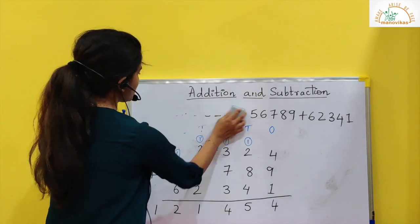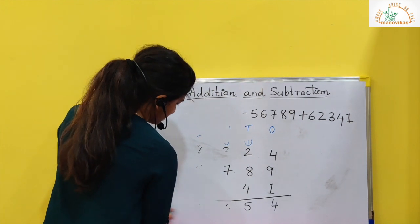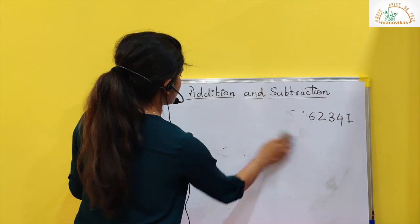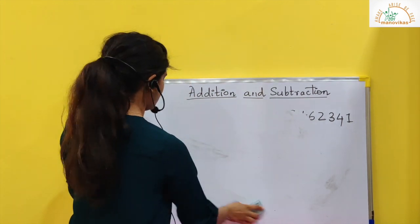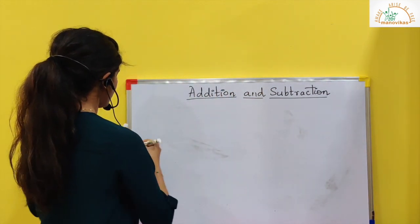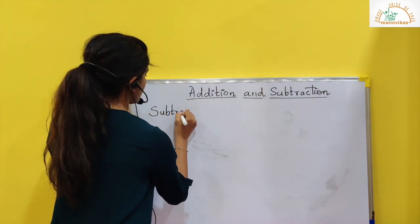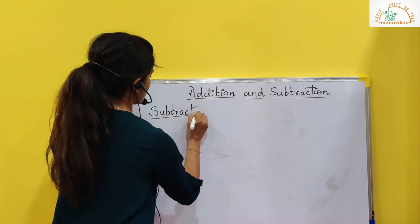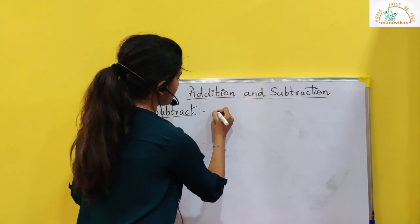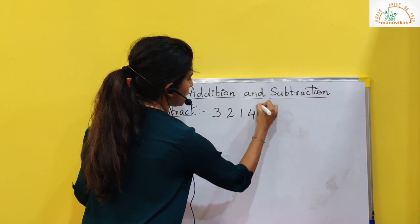Alright students. Now let's see how to do subtraction. Subtract. I have some numbers here: 3, 2, 1, 4, 8.